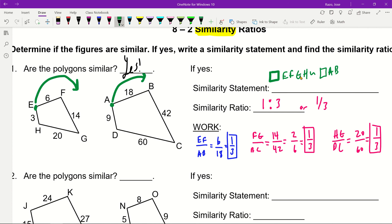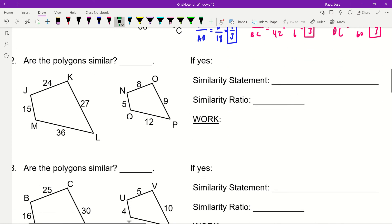You have quadrilateral EFGH - that's a little tilde for similar - to quadrilateral ABCD. Just be very careful. Now let's look at one that's not similar.